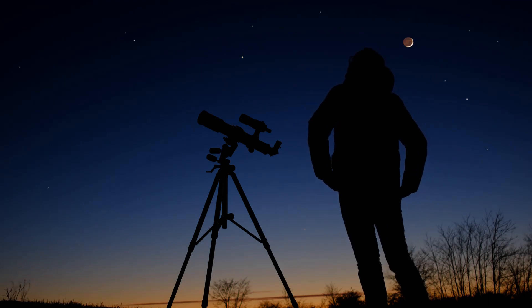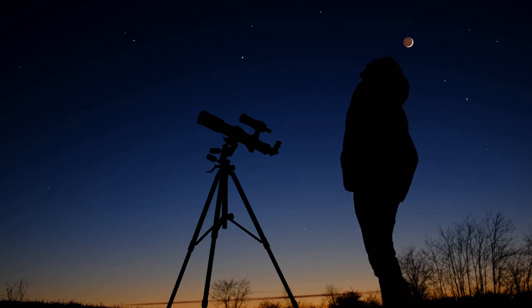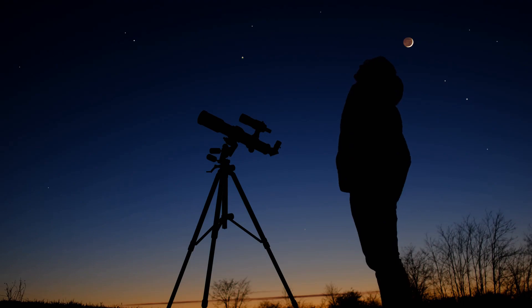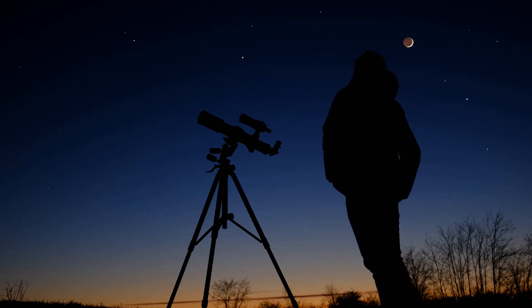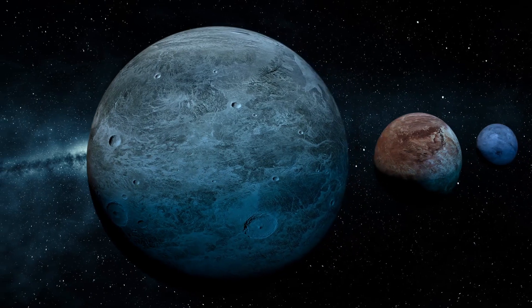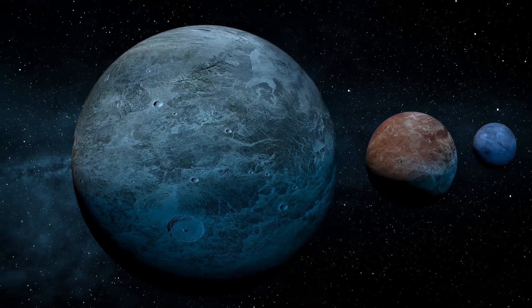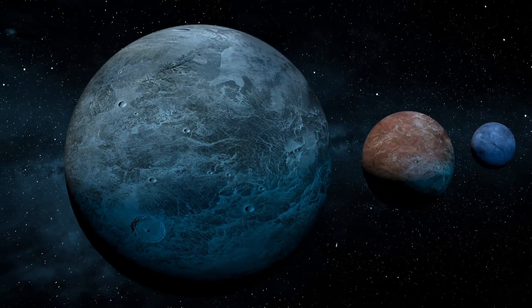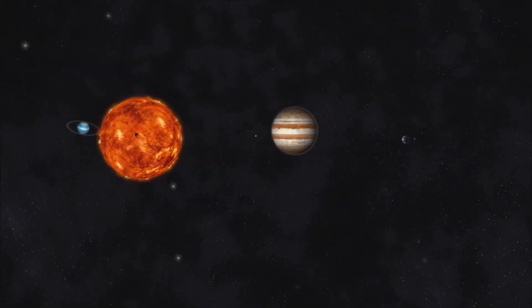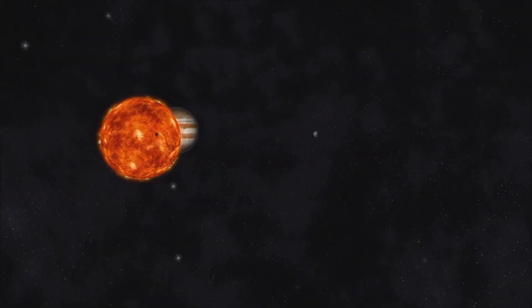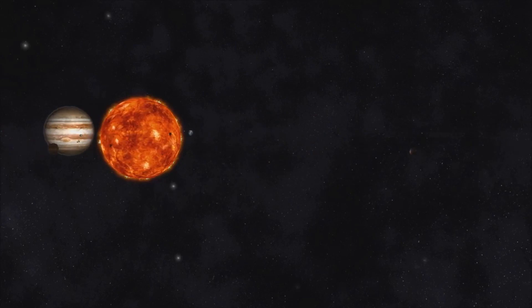Kepler's first law of planetary motion tells us that planets orbit the sun in elliptical, not circular, paths. The second law reveals that a planet sweeps out equal areas in equal times, meaning it travels faster when it's closer to the sun. And the third law connects a planet's orbital period with its average distance from the sun, showing us the rhythmic dance of the solar system.